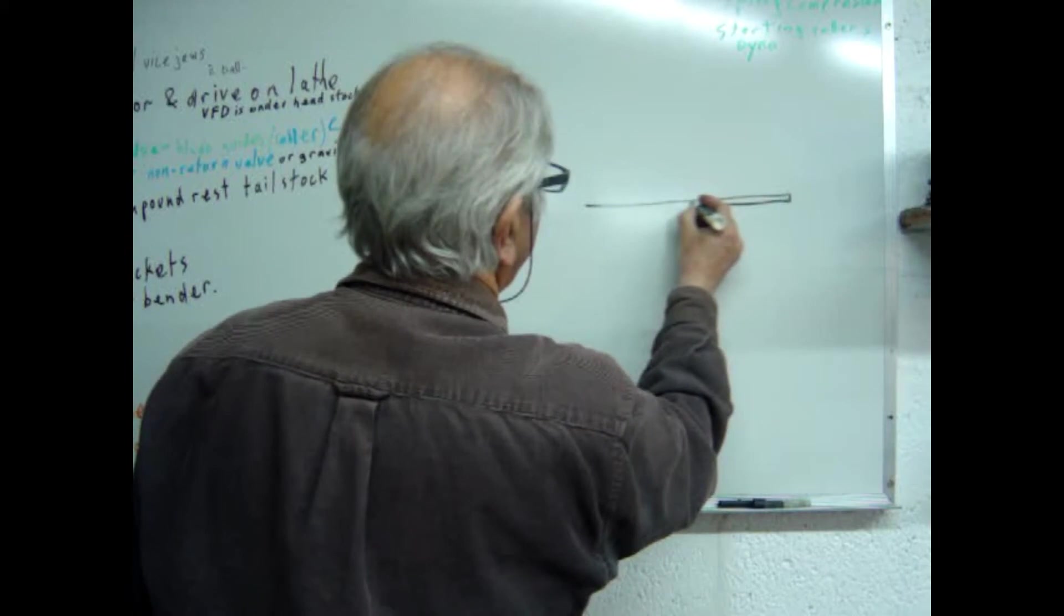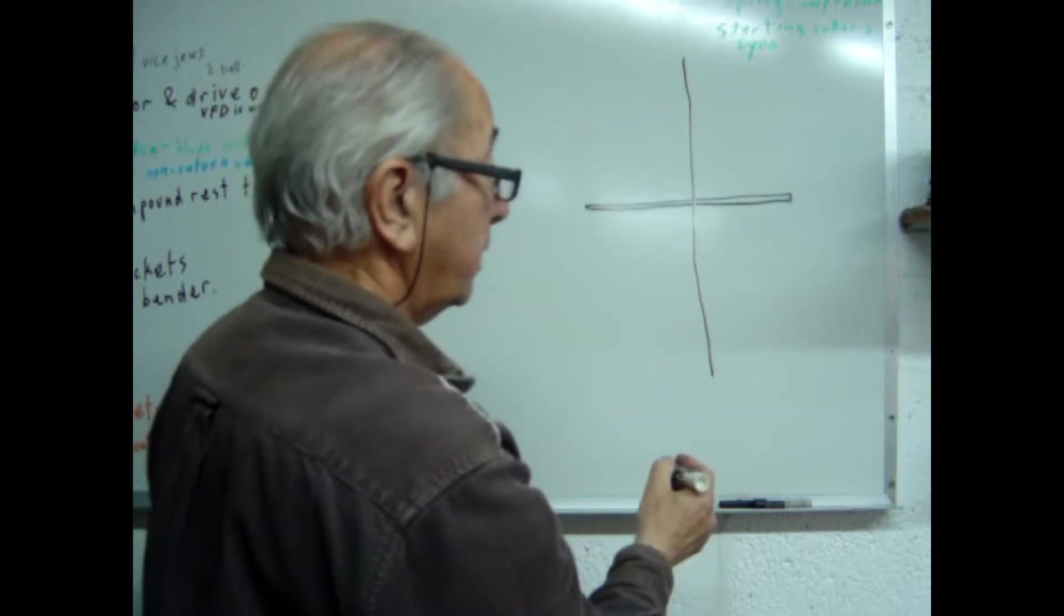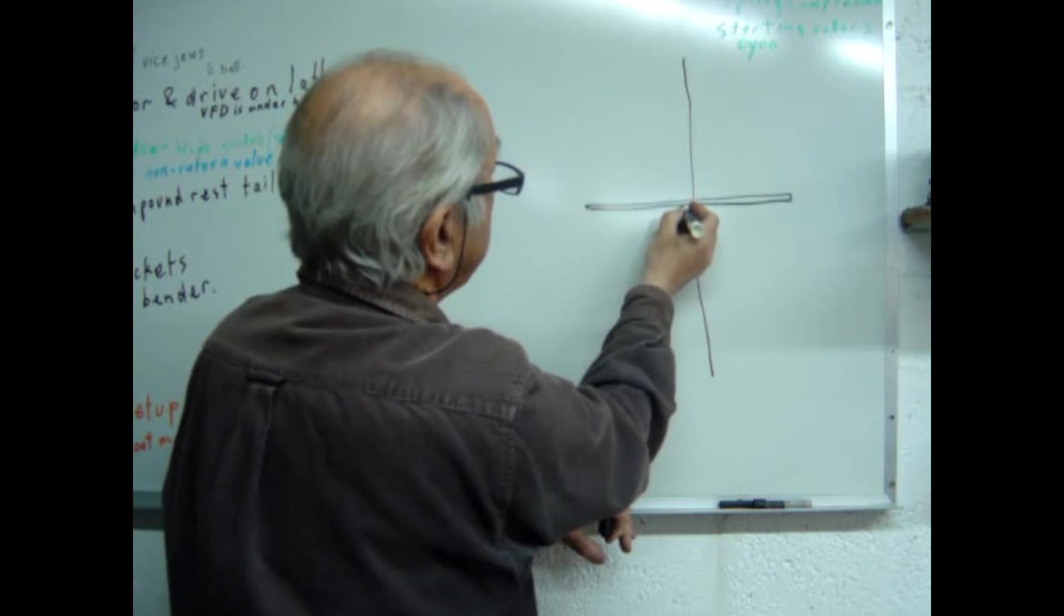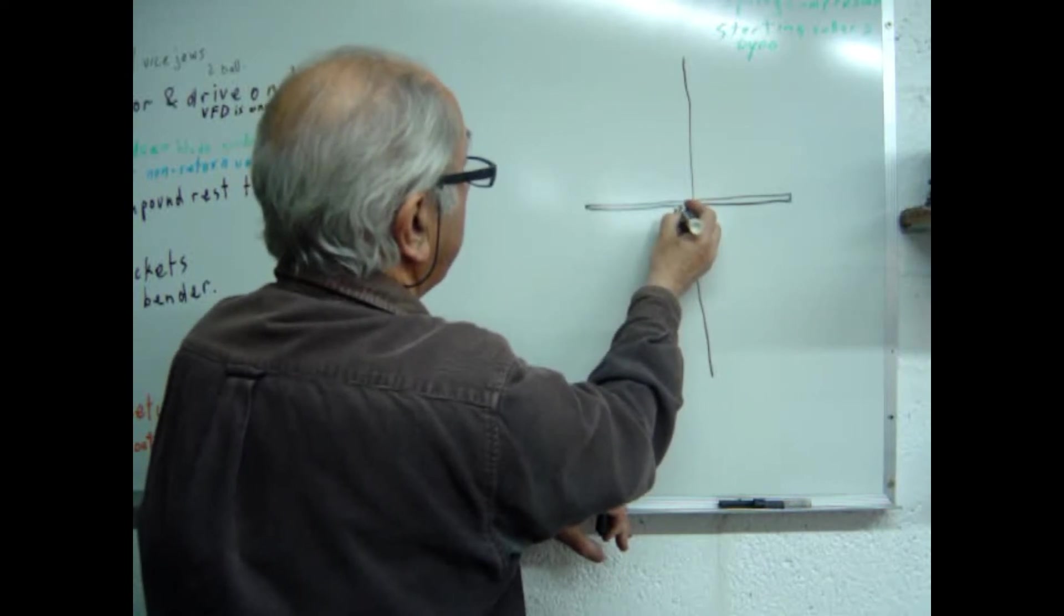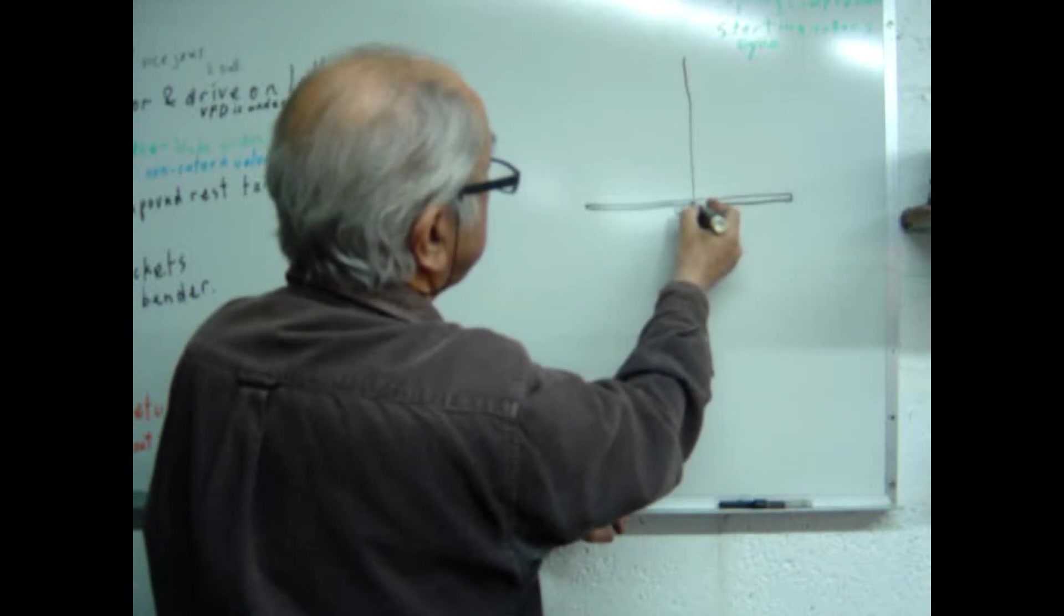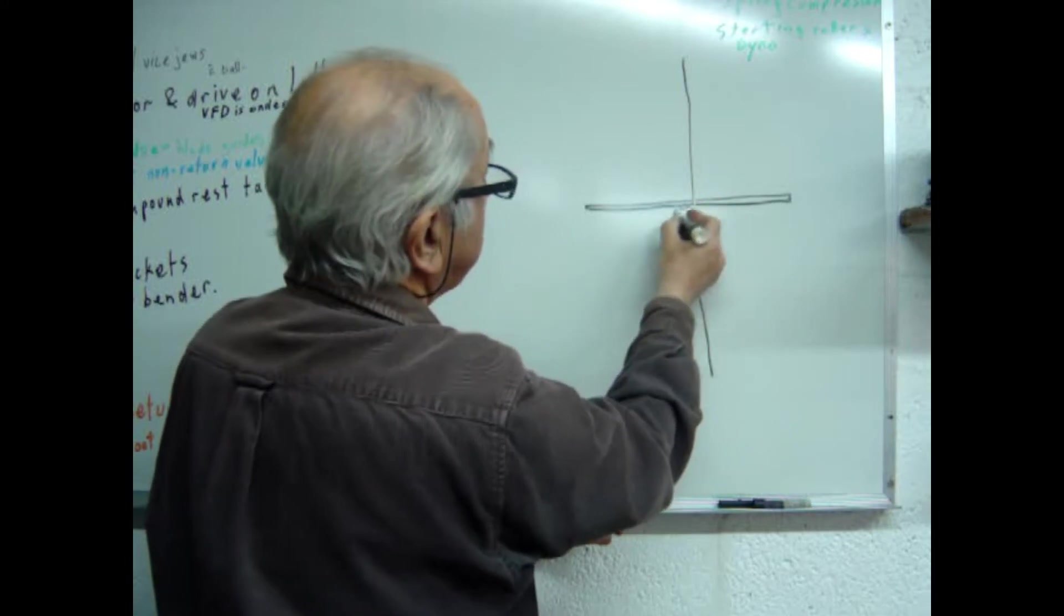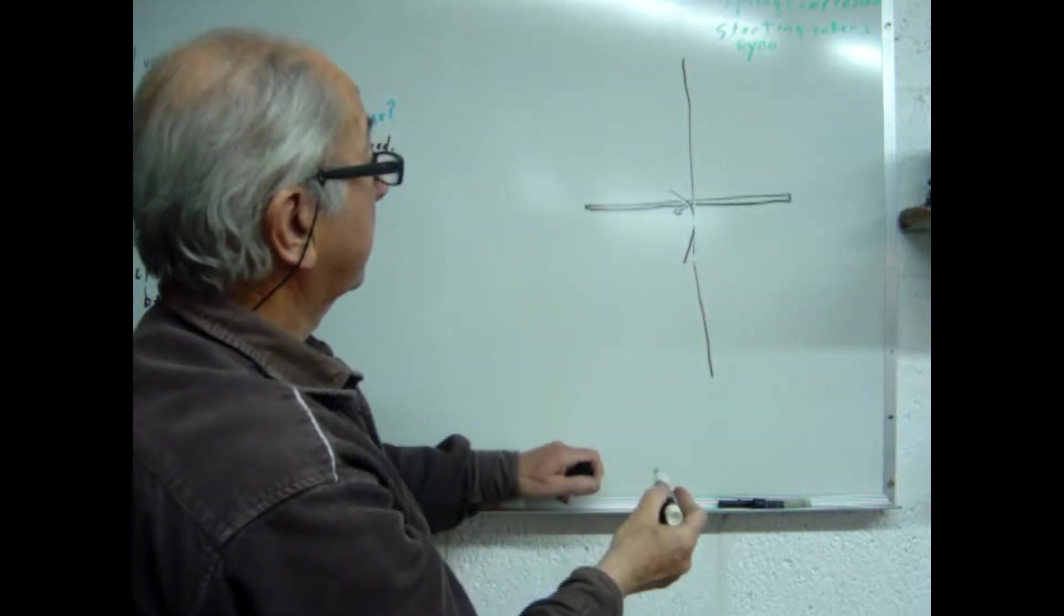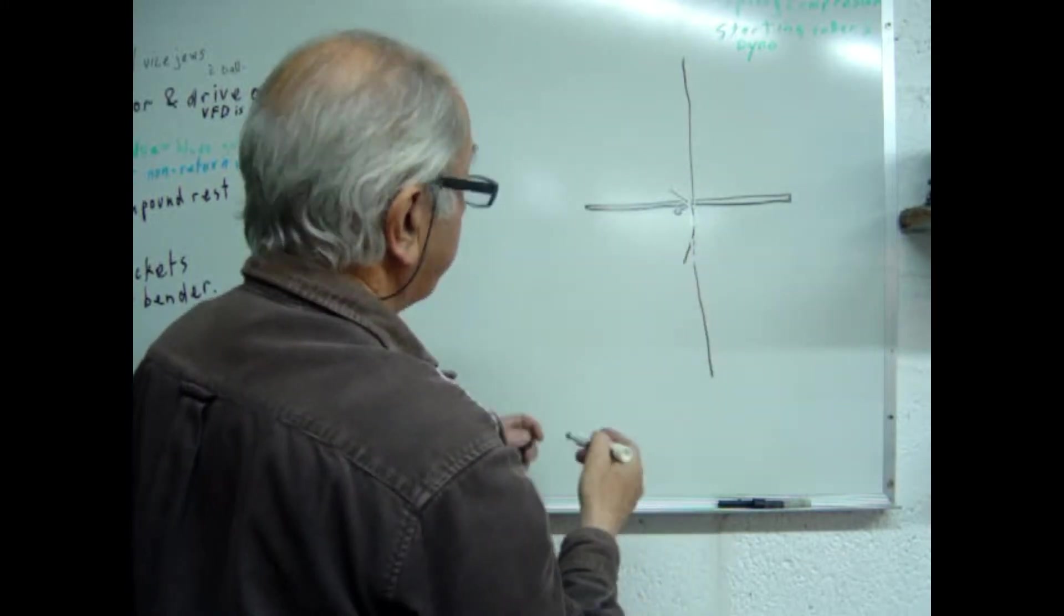If this is the bandsaw table again, the bandsaw blade. Now, if I were to use a simple pivot, but instead of putting it here, as we were just looking at, if I put it over here, then this part where the blade passes through will move on an arc that's determined by this pivot, to move on an arc something like that.